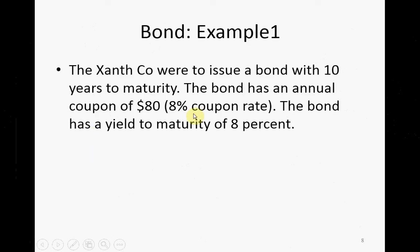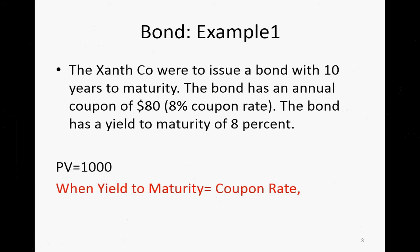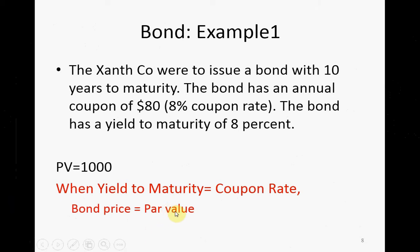Here is one example — luckily, this is an annual coupon, so the frequency is one. This company issued a bond with 10 years to maturity, a coupon of $80, and a yield to maturity of 8%. Solving for the bond price gives $1,000 — exactly the face value. Remember this: when the yield to maturity equals the coupon rate, the bond price equals the par value, which is $1,000.